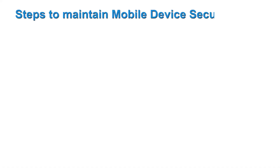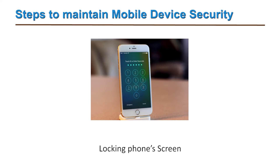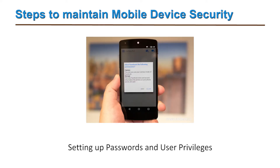To ensure that a mobile device is not hacked or manipulated, users should know some tips and tricks. There is a 7-point mechanism to safeguard devices and transactions. The first step is locking the phone screen. The second is setting up passwords and user privileges. The third is using secured networks.